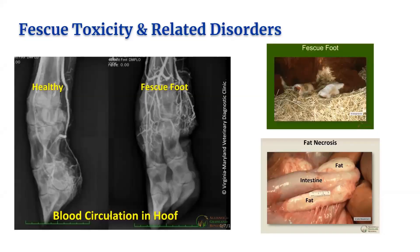Fescue toxicosis causes many disorders in grazing animals. Fescue toxicosis symptoms in cattle and other ruminant livestock include gangrenous sloughing of hooves and tails, retention of winter coats in the summer, shaggy unkempt appearance, vasoconstriction, high body temperature, fat necrosis, heat stress, reduced forage intake, increased respiration rate, and lowered heart rate.